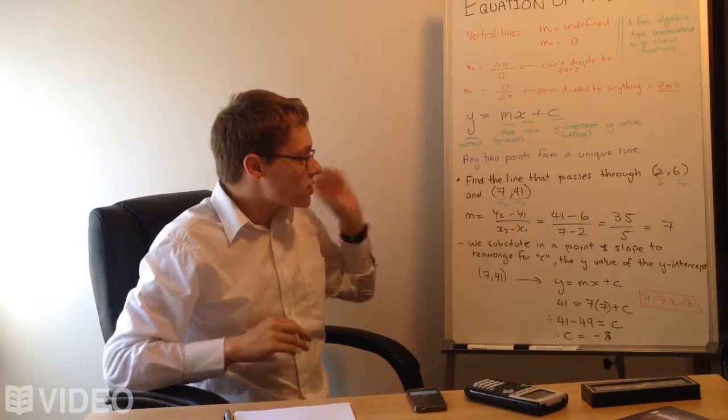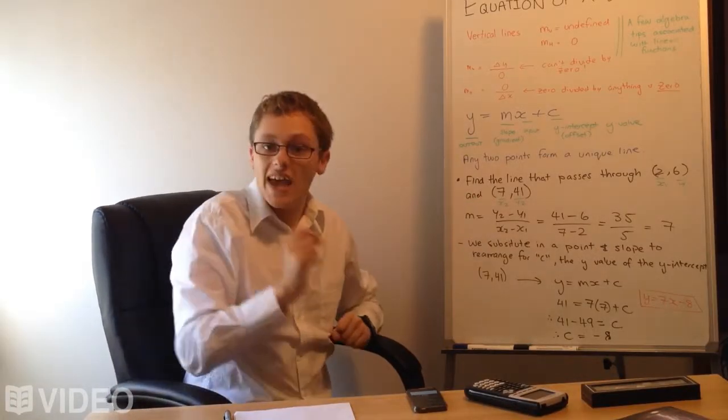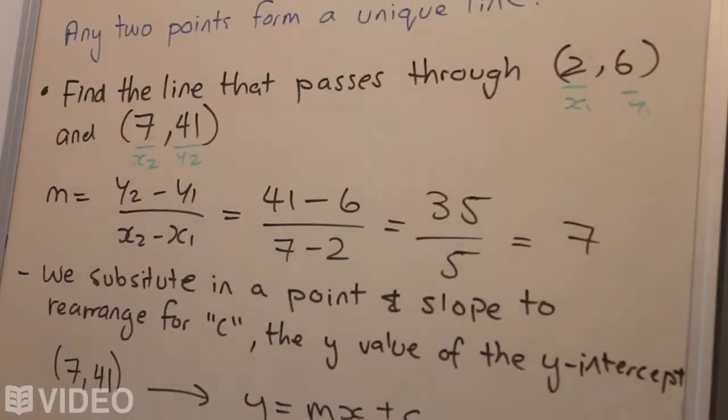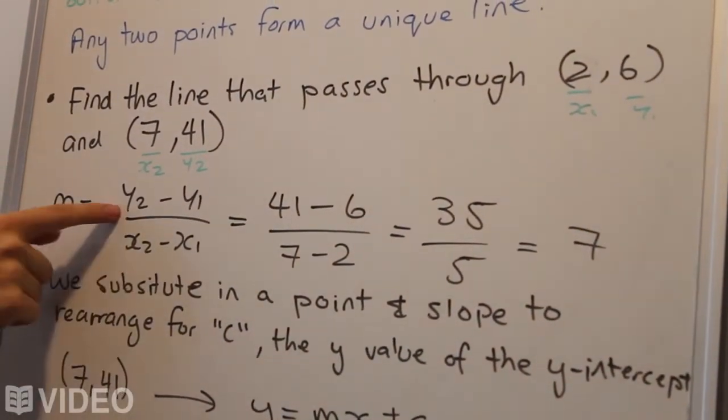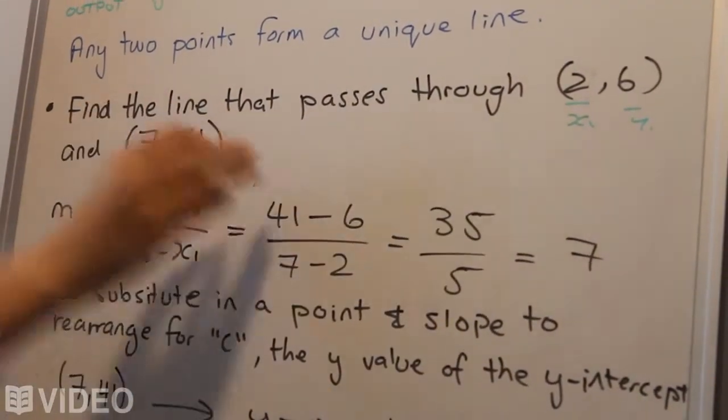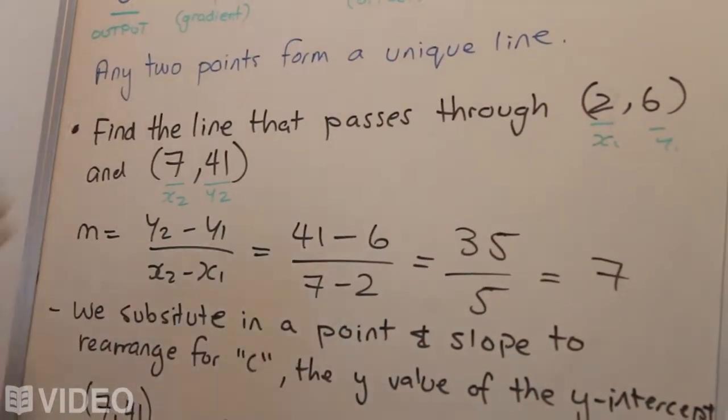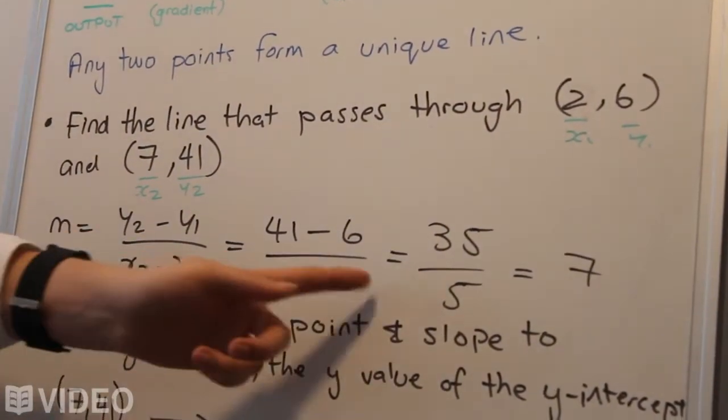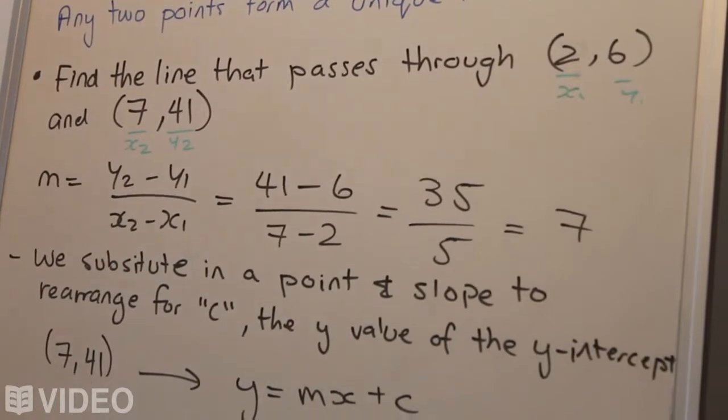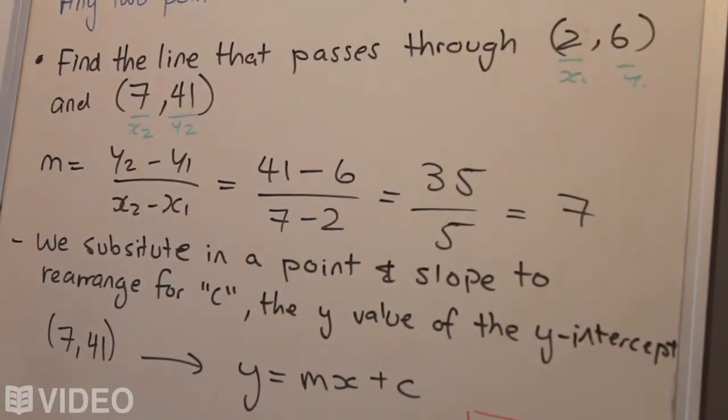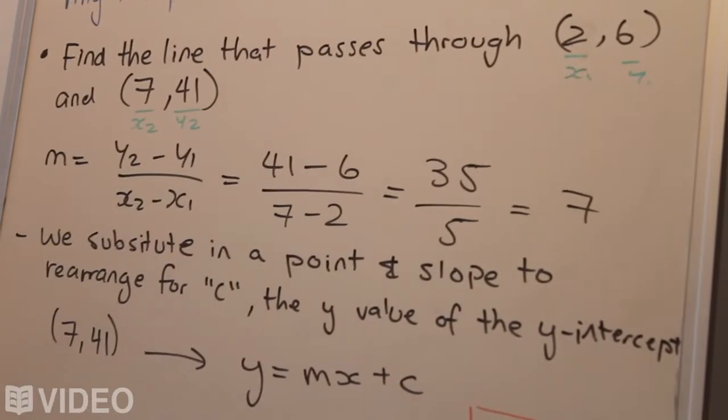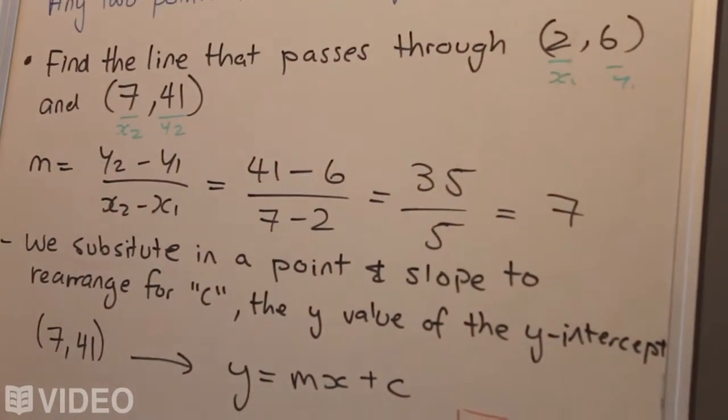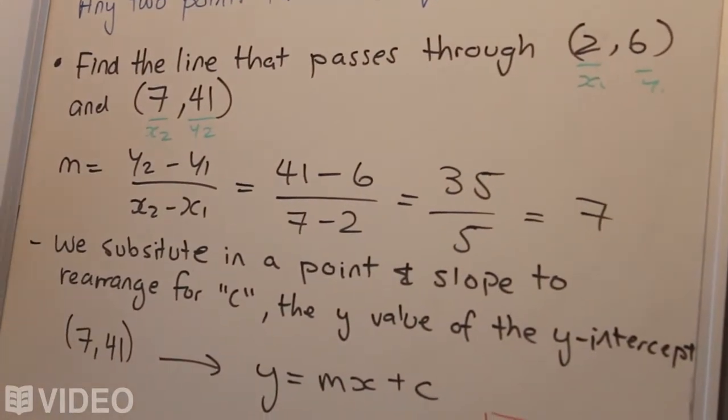What we do is I've already identified them as x2 and y2 and x1 and y1. I just substitute them into the formula. I take that y2 and plonk it into position in the formula. I do the same with y1 and the same with x2 and x1. Then I get 35 over 5 from the two points that are listed on the board, and 35 divided by 5 works out to be 7. So we can simplify the slope, which is denoted by m, to just be 7.